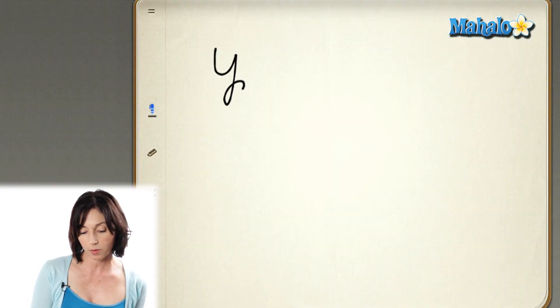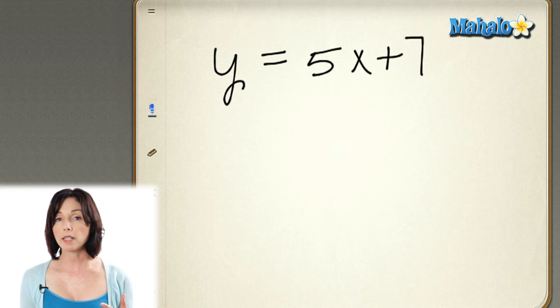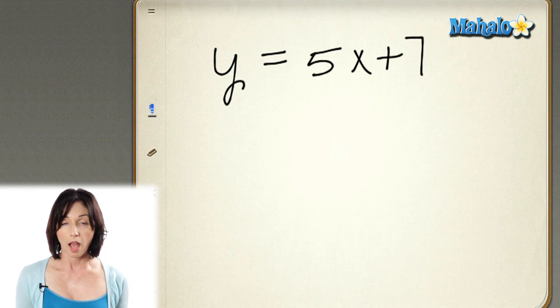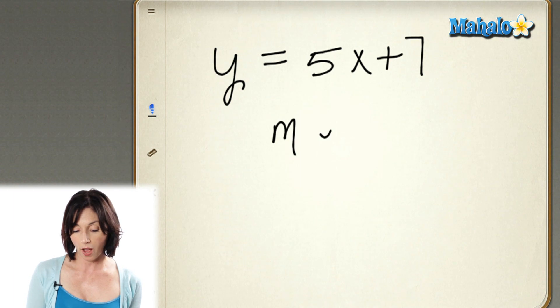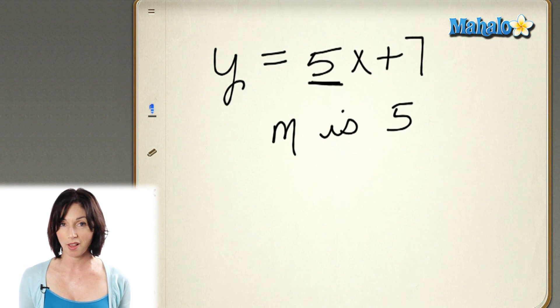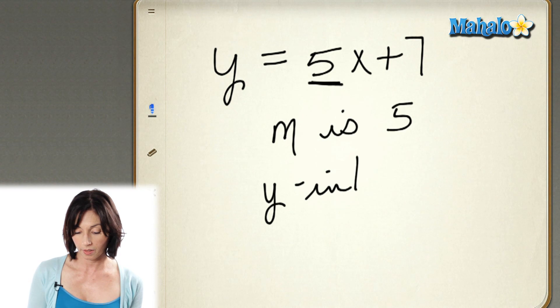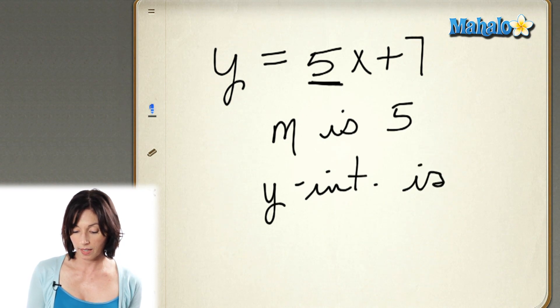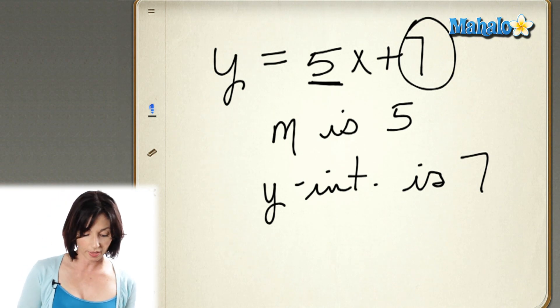You can actually tell a lot by just looking at the equation of a line. Let's say we have a line that's y equals 5x plus 7. Because I know slope-intercept form, I can just look at the equation and tell that the slope of this line is 5, because 5 is what's multiplying my independent variable x. And the y-intercept is 7.